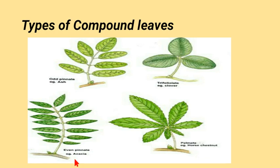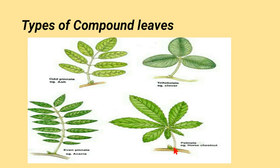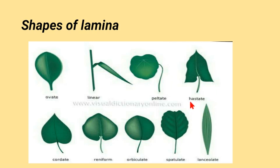Clover is trifoliate — three leaflets radiate from a single point at the distal end of the petiole, making it a trifoliate compound leaf. We also have palmate compound leaves, an example of which is horse chestnut.